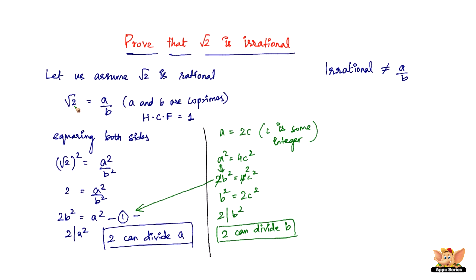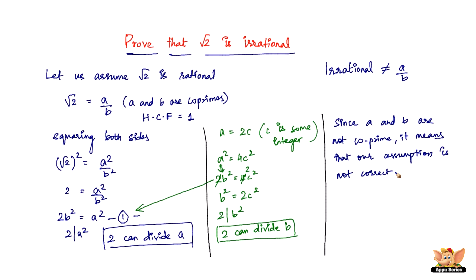Since a and b are not co-prime, our assumption is not correct. Therefore, √2 is not rational — that is, √2 is irrational. This is how we prove that √2 is irrational. It's a proof by contradiction: we assumed √2 is rational, meaning it has a ratio a/b where a and b are co-primes. Since that leads to a contradiction, √2 cannot be rational and is therefore irrational.